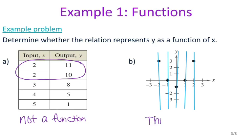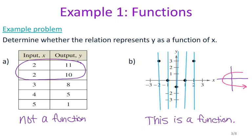So letter b is a function. Now let me draw a graph that would represent something that is not a function — something that would fail the vertical line test. Here's your x and y axis; let's say you have a graph that looks like this. When I try my vertical line test, the vertical line touches in two spots, so this graph is not a function.